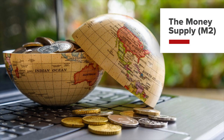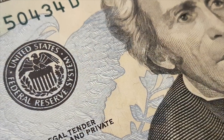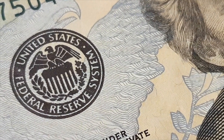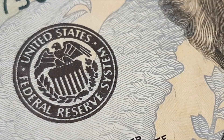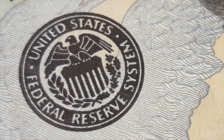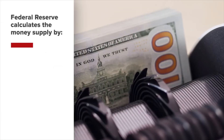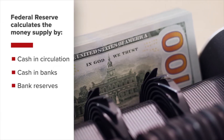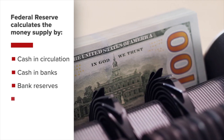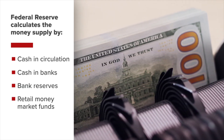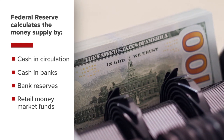The money supply, also known as M2, tells us how many U.S. dollars are available in the economy. The supply of money is calculated by the American central bank, the Federal Reserve, or simply known as the Fed. It generally includes the cash in circulation, cash in bank accounts, cash in banks labeled reserves, and retail money market funds. The Fed adds up all of these components to calculate the total money supply.